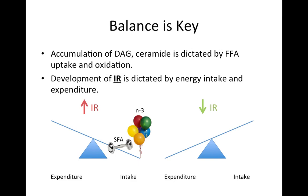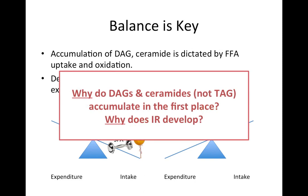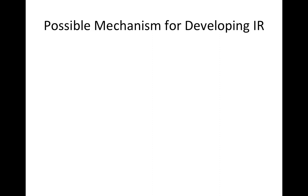This still doesn't answer the underlying question of why DAGs and ceramides accumulate. Why aren't they stored as triglycerides? That's our safe depot. Why is it a problem and why does insulin resistance develop at all? I went through in a fair amount of detail the mechanism at the mitochondria for the development of insulin resistance due to an increase in DAG and ceramide content.